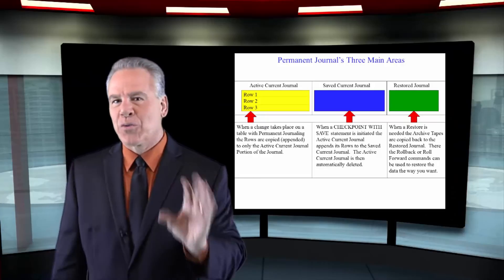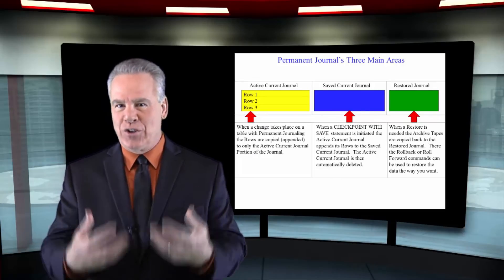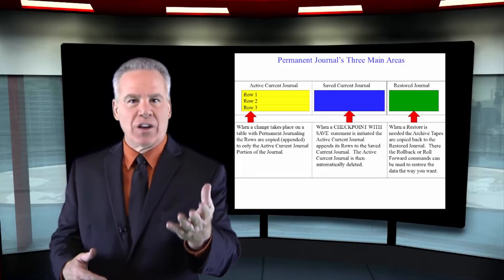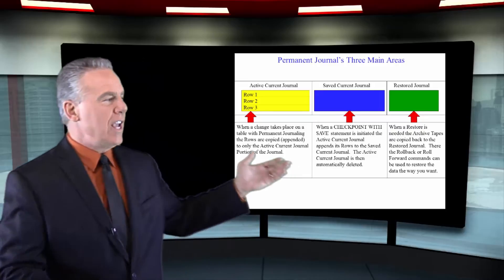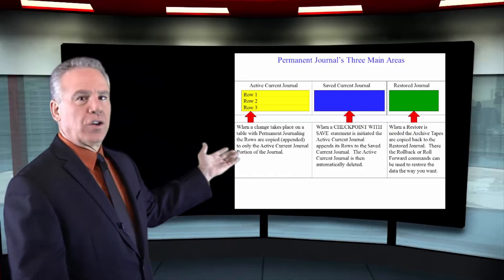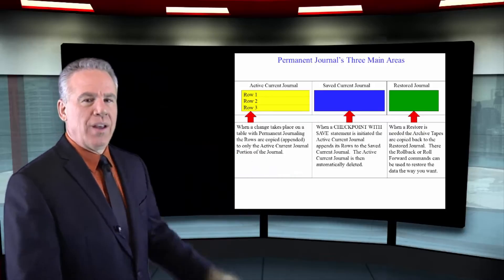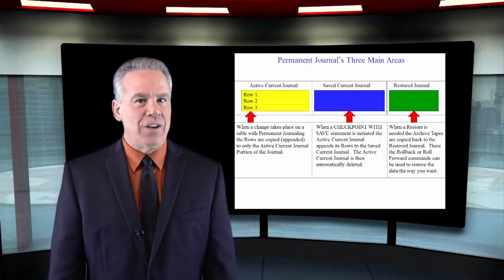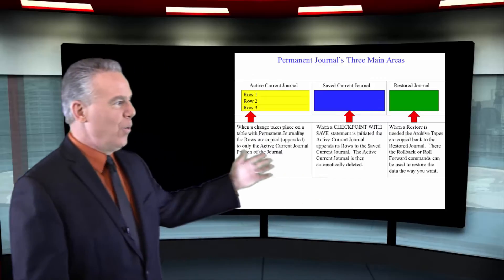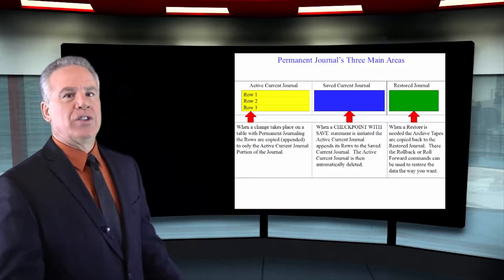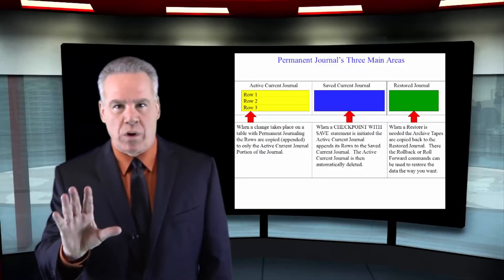Hi. There are three main areas to every journal and I've color-coded them for you. There's the active current journal in yellow, the saved current journal in blue, and then there is the restored journal. Here's the way it works.